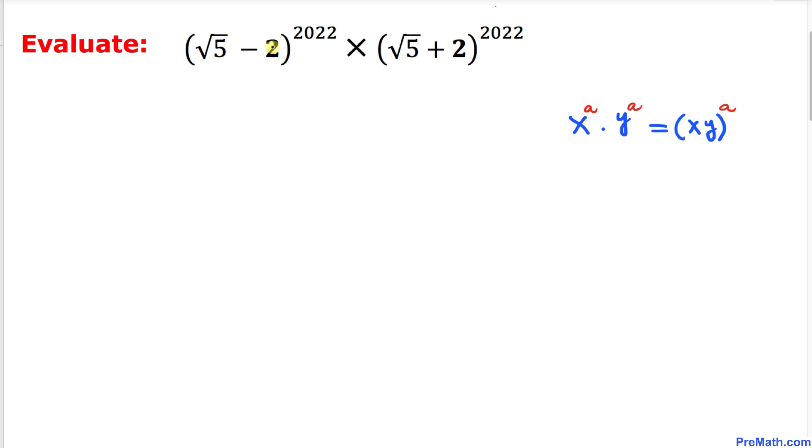We can write this given expression as square root of 5 minus 2, times square root of 5 plus 2, then to the power 2022, by using the rules of exponents.